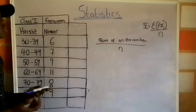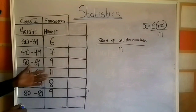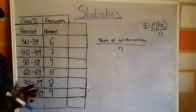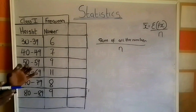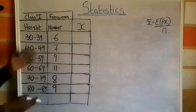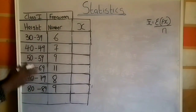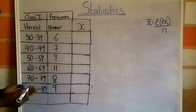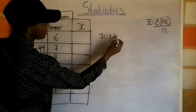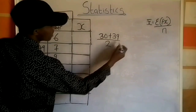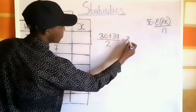The next thing is to find the value of x. We already know the frequency. The value of x is calculated by finding the midpoint of each class interval. To get the midpoint of 30 and 39, I add 30 plus 39 and divide by 2, which gives 34.5.